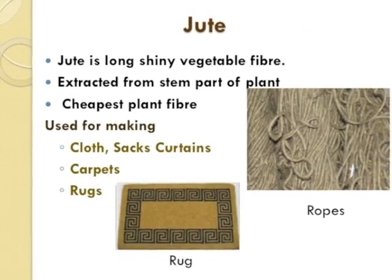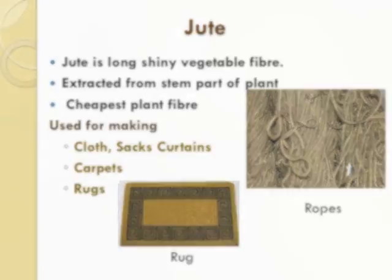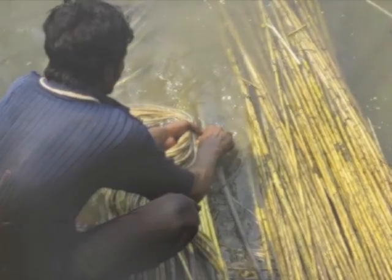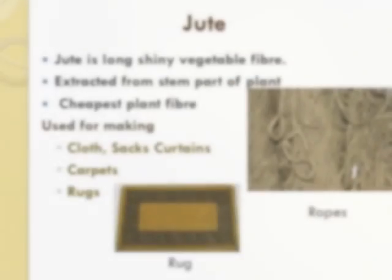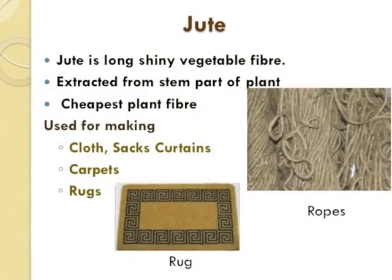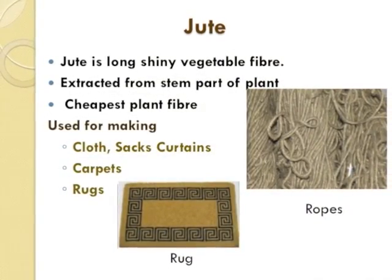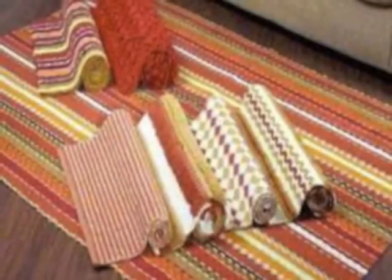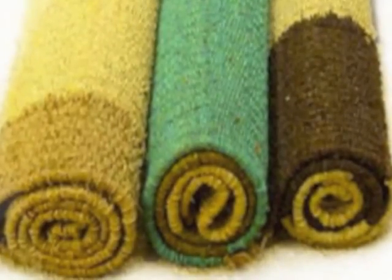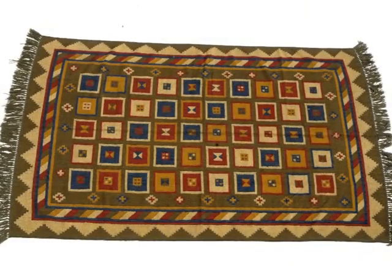Jute. Jute is a long shiny vegetable fiber extracted from the stem part of the plant, generally found in the south of India. It is the cheapest plant fiber and is used for making cloth for sacks, curtains. We can also see carpets and rugs which are made from jute.